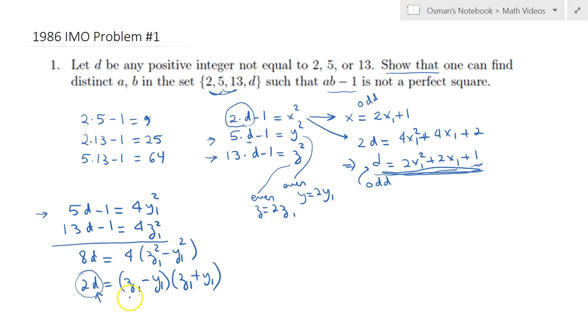But when you focus on the right-hand side, we have the difference and the sum of two integers, which we know very well will have the same parity. So either both of these expressions will end up being odd, or both of them will end up being even at the same time.